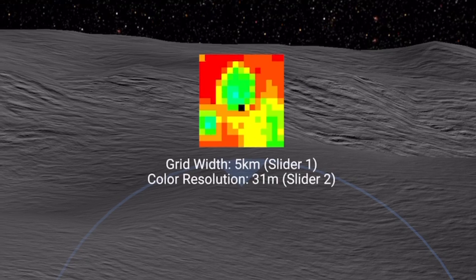The colors represent the relative terrain heights, with the green color being approximately what your craft is at right now, red being above, blue being below, and all the colors in between scaling there.